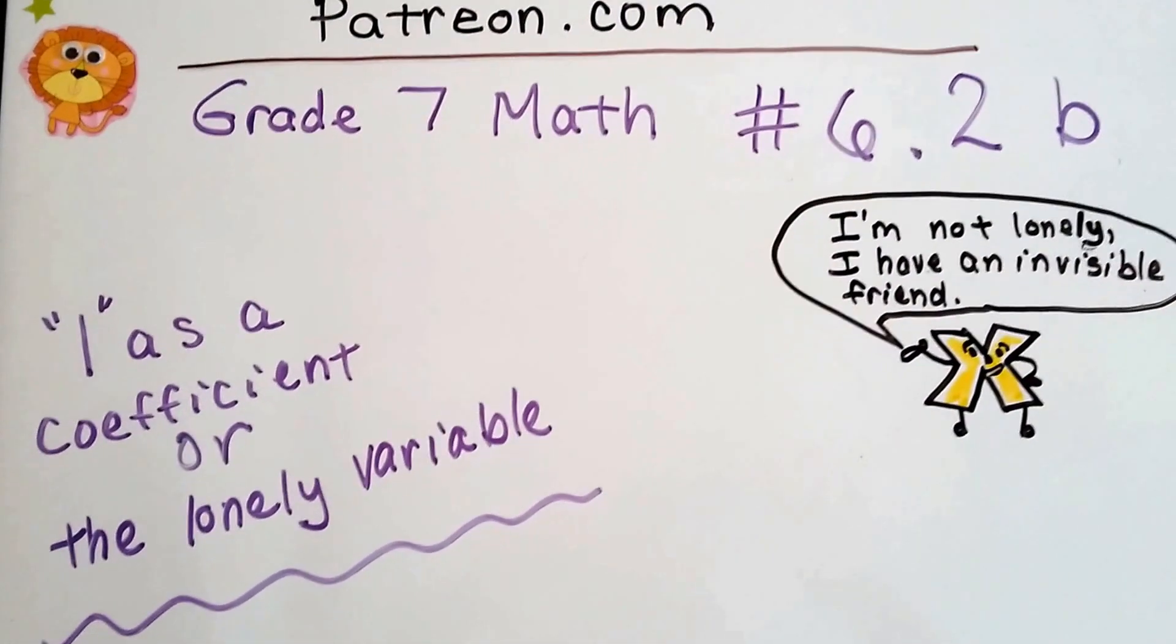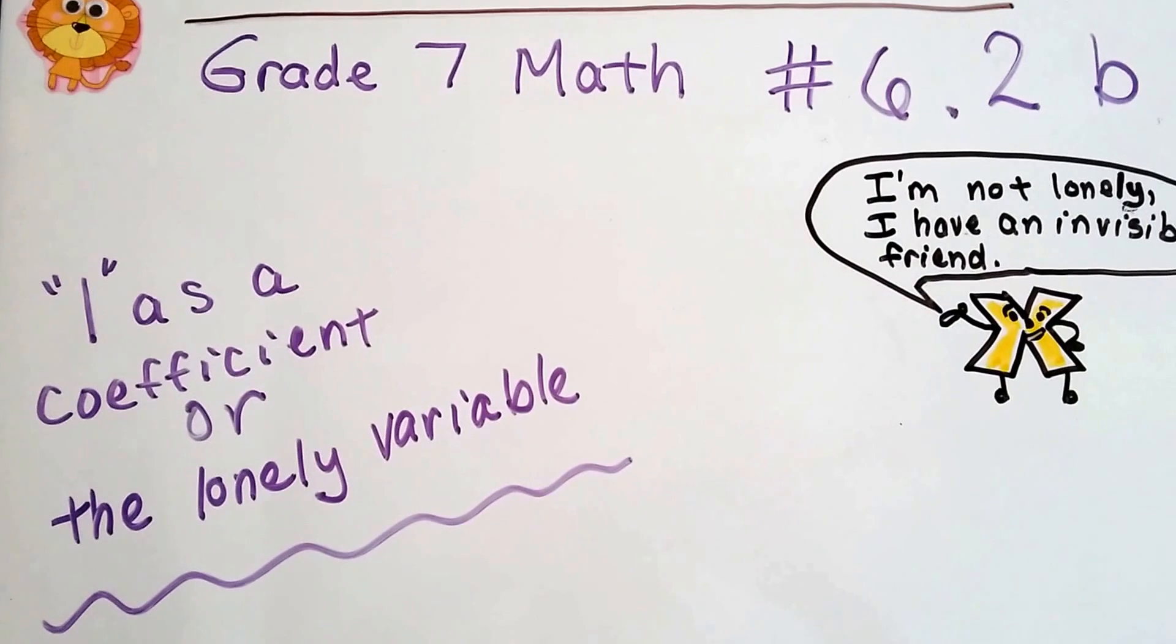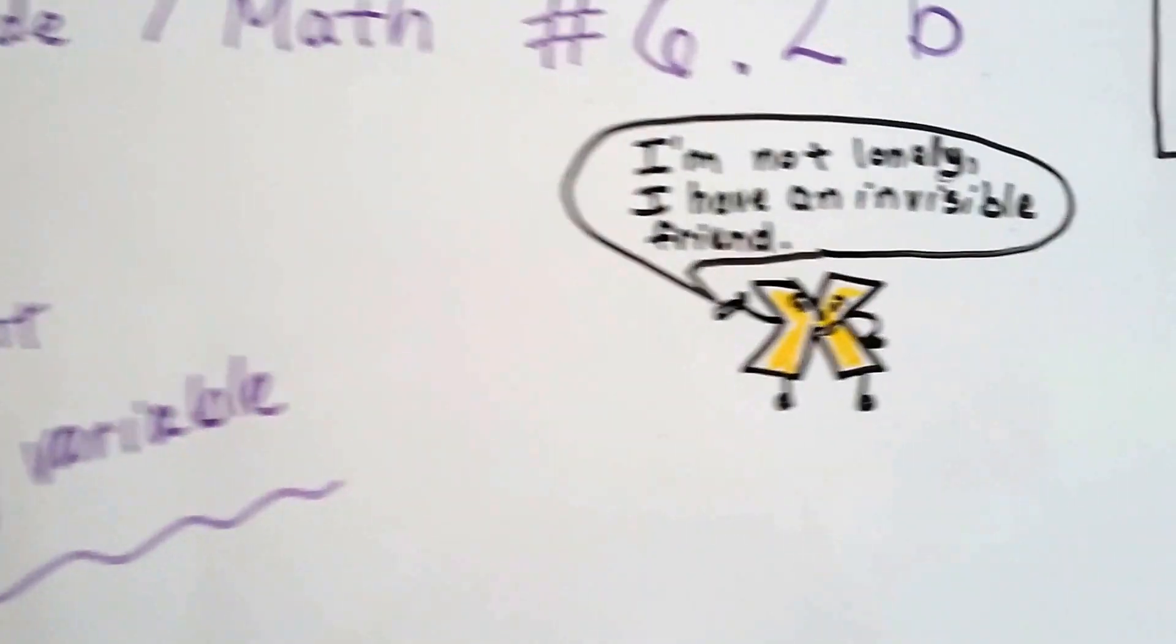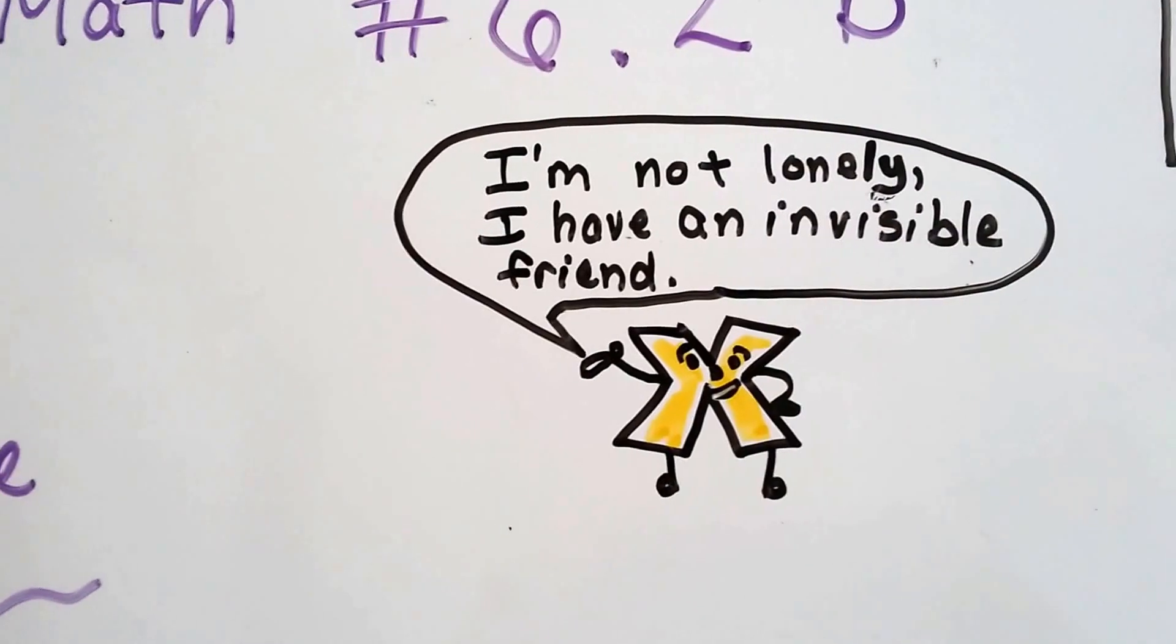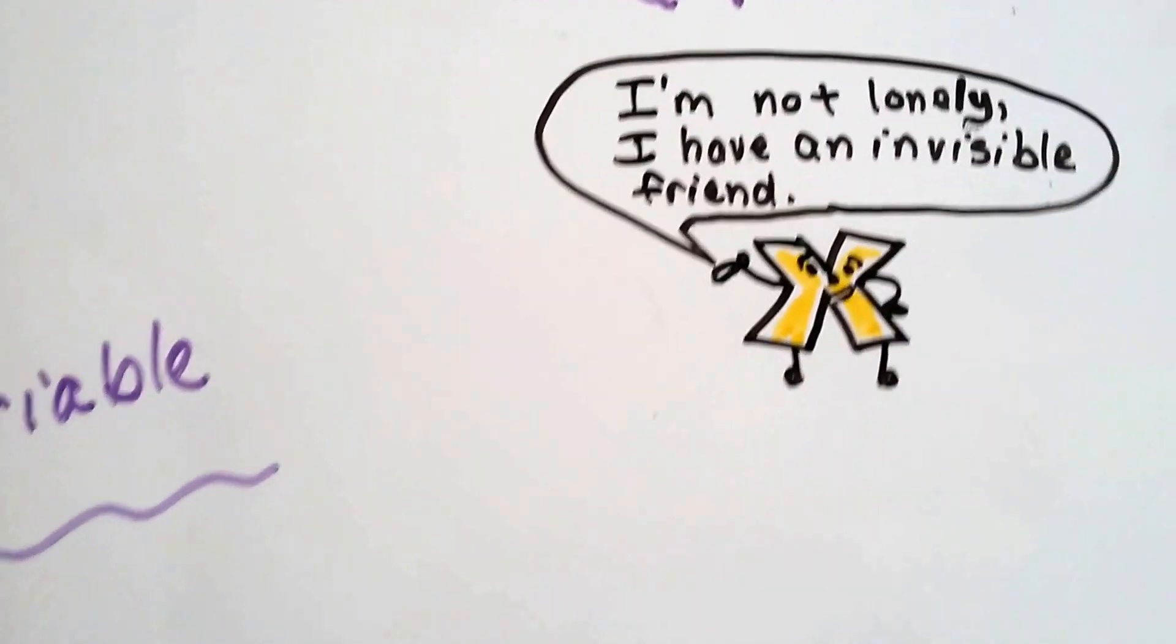Grade 7 math number 6.2b: 1 as a coefficient or the lonely variable. Our little x here says he's not lonely. He says he has an invisible friend right next to him. I don't see anybody. Do you?